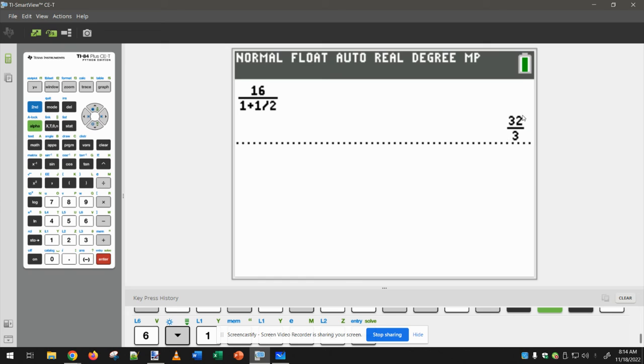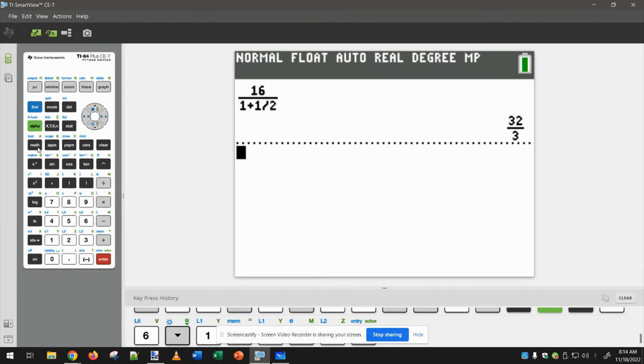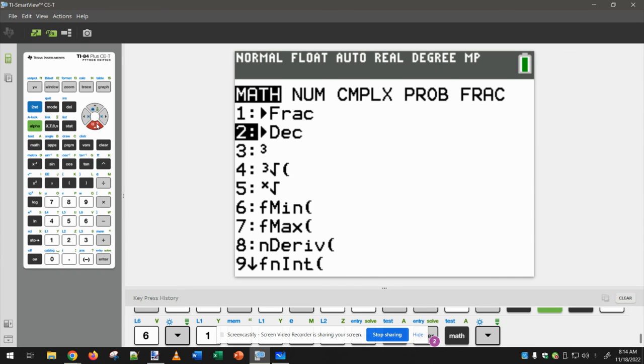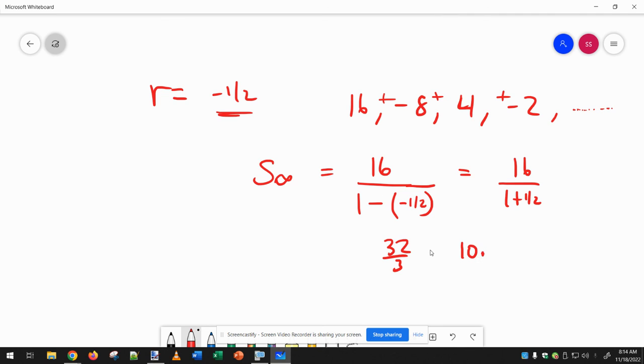And this would be, as a fraction, 32 over 3, because if I want this as a decimal, it's going to be a repeated number, 10.6.